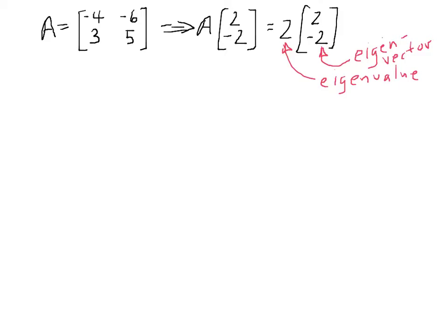So we said that that vector 2, negative 2 was an eigenvector of the matrix, and the number 2 is the corresponding eigenvalue. By the way, there's no relationship between all the 2's here. That's just a coincidence that we have 2's in the eigenvector and that our eigenvalue is 2.